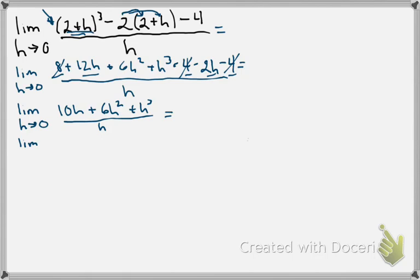So, we have limit as h approaches 0. I can factor an h out of the numerator, and I get 10 plus 6h plus h squared, which allows me to cancel out the h in the denominator.